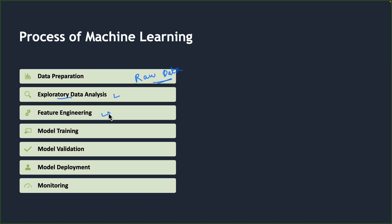Next is the model training phase. Data scientists explore various algorithms and hyperparameters available for the chosen algorithm, and use the prepared data to find the best performing model — one that gives better accuracy or a better evaluation metric on the test or validation data. Hyperparameter tuning is also performed at this stage.